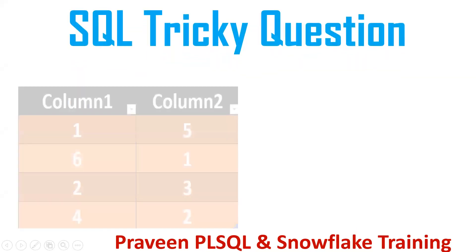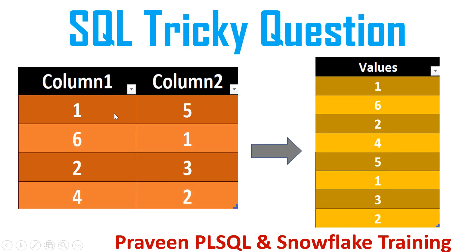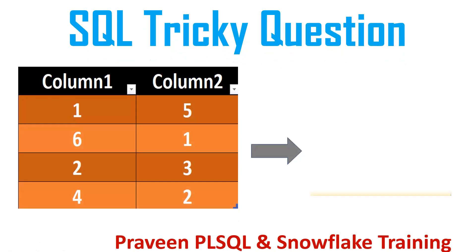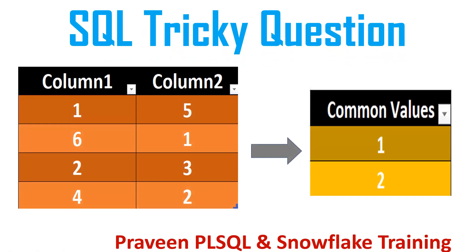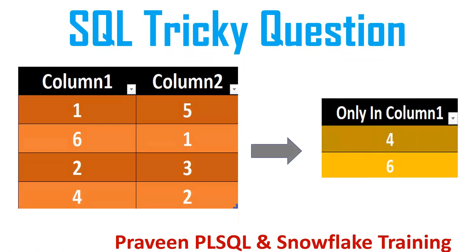In a similar fashion, one more question: I want to club column 1 and column 2 — values 1, 6, 2, 4, 5, 1, 3, 2. Also, I want to get common data from both columns, which is 1 and 2. And another requirement: I want to get records from column 1 which are not there in column 2 — that would be 4 and 6. These can be solved using set operators.